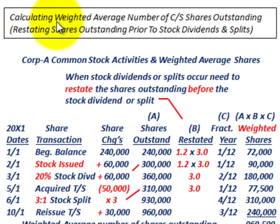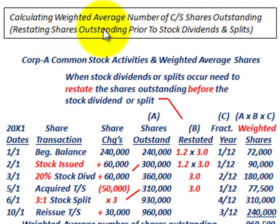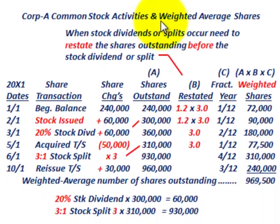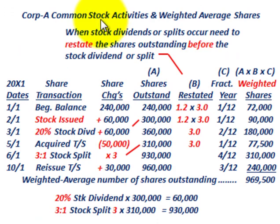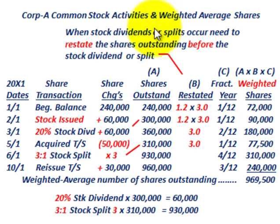What we're going to be going over here is calculating the weighted average number of shares of common stock that's outstanding, and we're going to be restating these shares outstanding prior to any stock dividends and stock splits to determine these weighted averages. So for example, we're going to have Corporation A and we're going to be looking at its common stock activities and calculate the weighted average shares based on these activities.